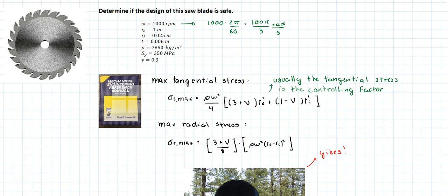In this problem we're asked to determine if the design of this saw blade is safe. The parameters are a rotational speed of 1000 RPM, an outside diameter of 1 meter, and an inside diameter for the hole of 2.5 centimeters.